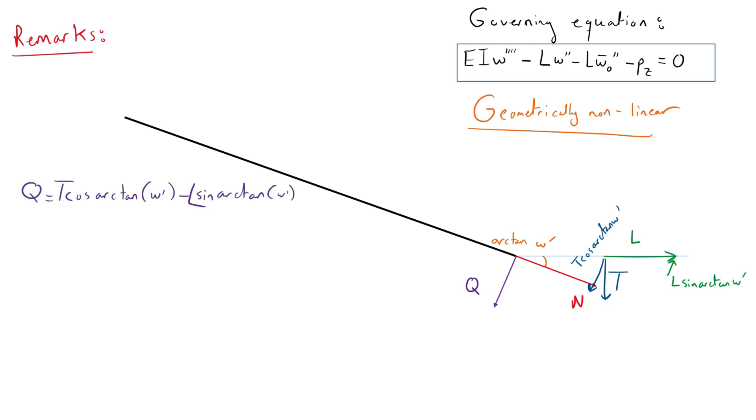We can then resolve the forces in the direction of the normal force. And this provides us with the expression for the normal force. Now applying second order theory, we can apply the following trigonometric assumptions. And so, we end up with the following expressions for shear and normal forces.